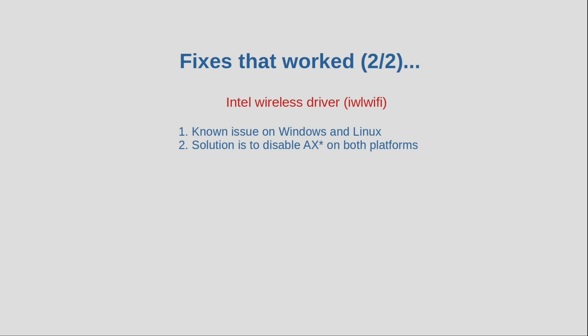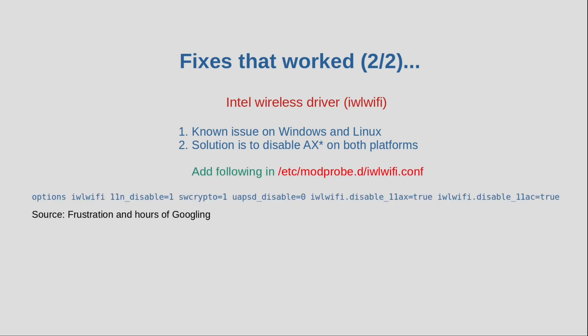I was able to pinpoint the problem and the solution is to disable this AX technology. In Windows, you right-click on the adapter settings, go to properties, and uncheck the boxes that relate to AX. In Linux, you need to create a config file at the path shown on screen and add these options. For example: disabling 802.11n, enabling software encryption, disabling AX, and disabling AC.